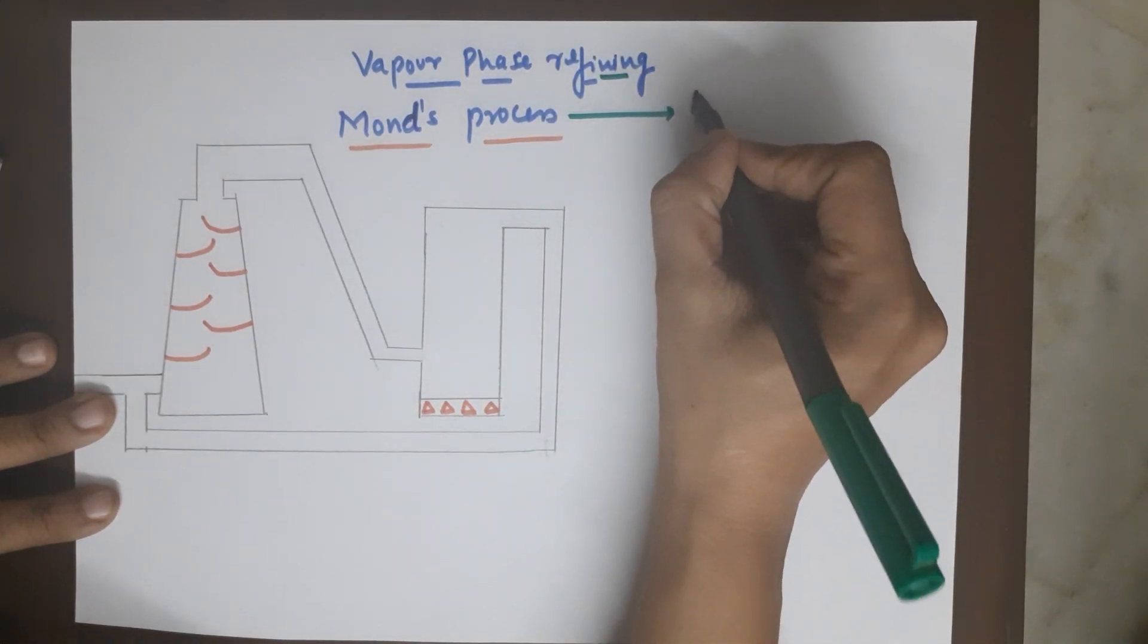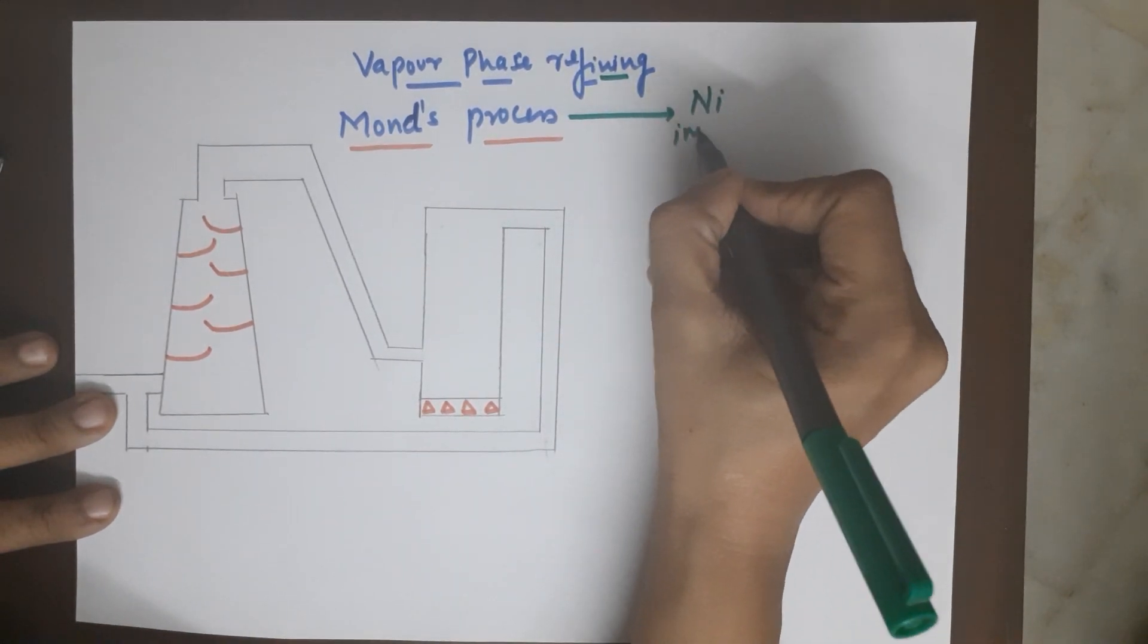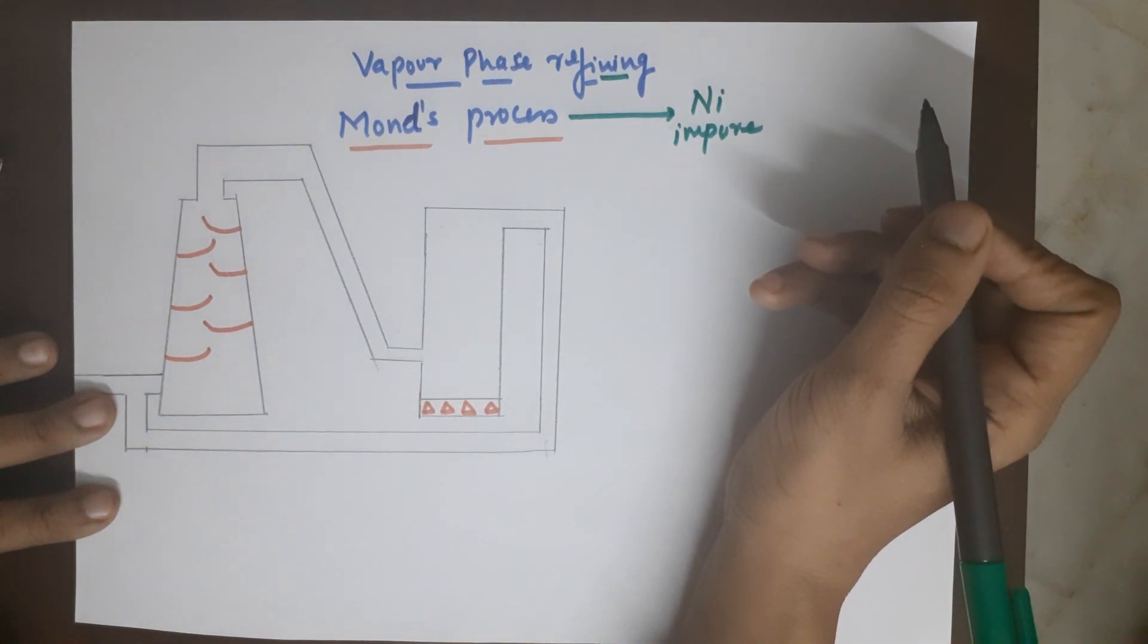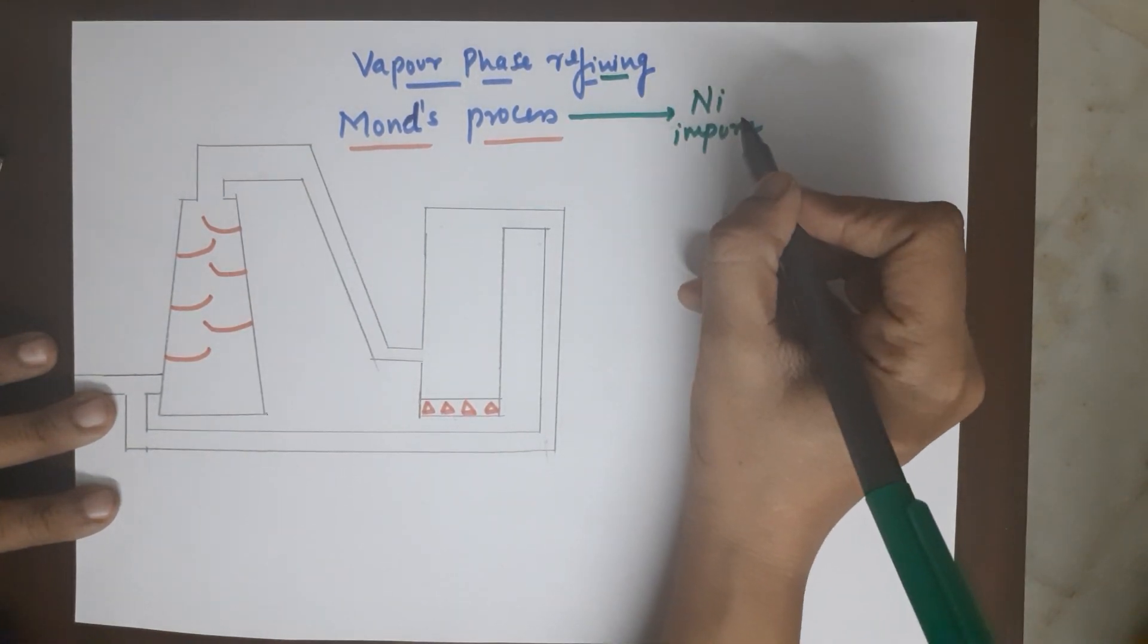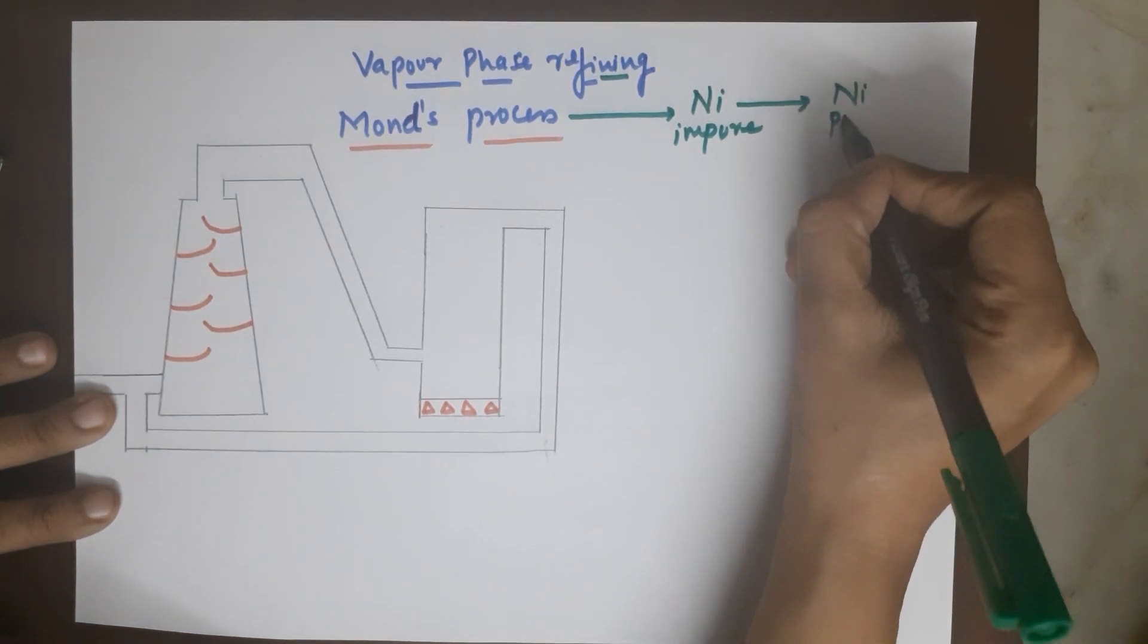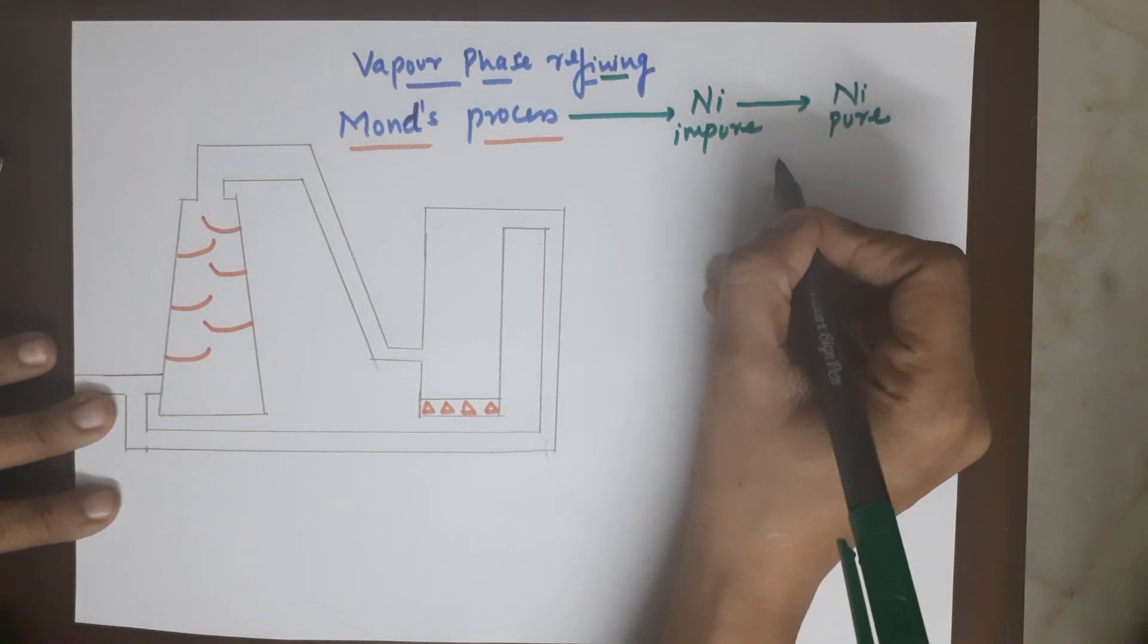Now this Mond process, the function is if you have an impure nickel, which means you have extracted it but the form of nickel that you have obtained is not pure and you want it in pure form, which means you are just purifying it.